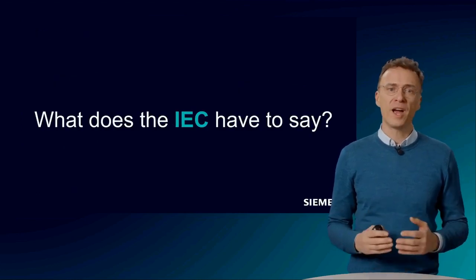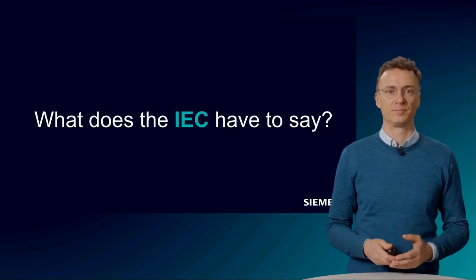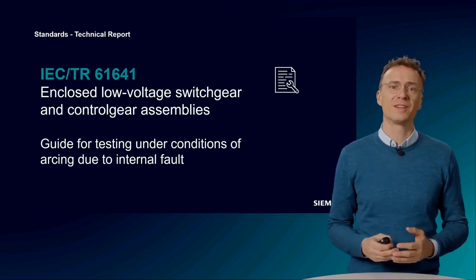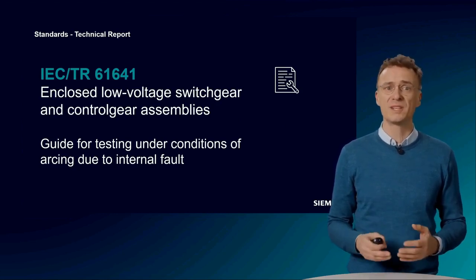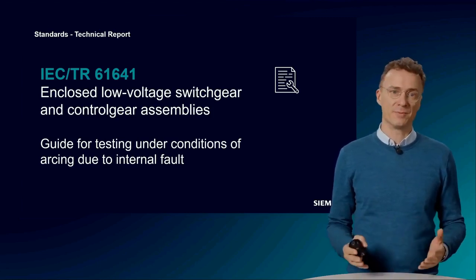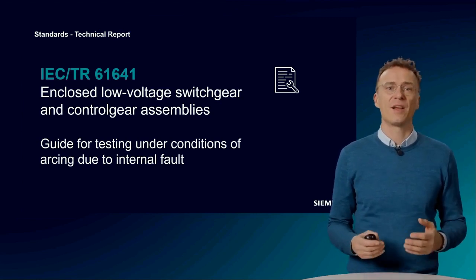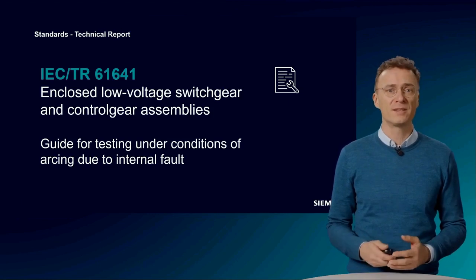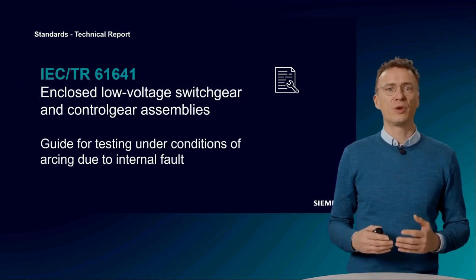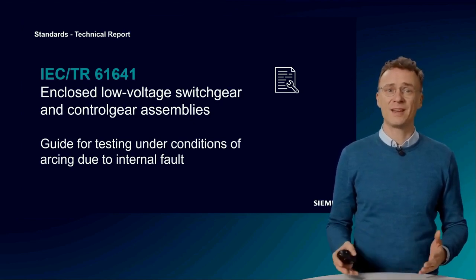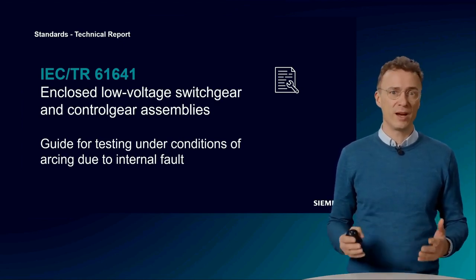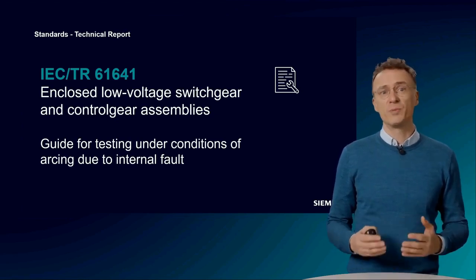A technical report from the IEC standards series is helping us. IEC Technical Report 61641 describes the requirements for testing low-voltage switchboards under the condition of arcing. As a technical report, it is an informative document that reflects the state of standardization but can be incorporated into standardization work later. No measures are defined on how to achieve arc fault protection — this is left to the manufacturer. However, it defines how the test is to be carried out and how the test result is to be evaluated.